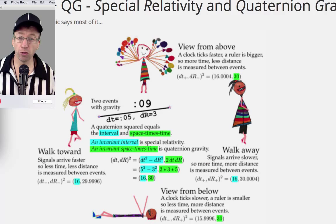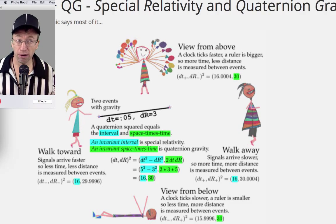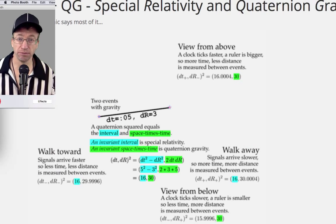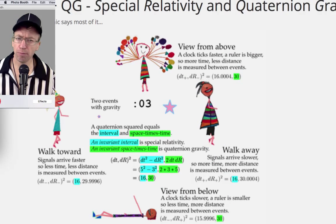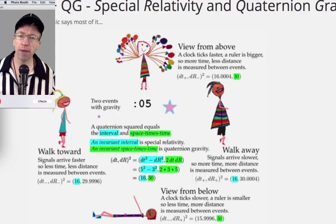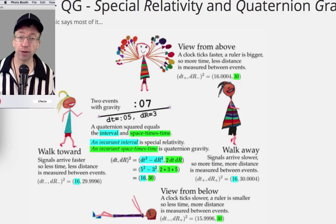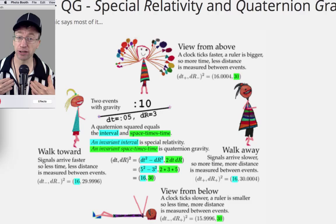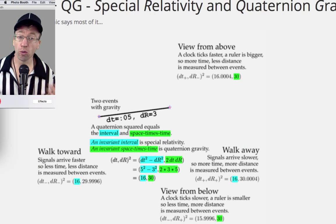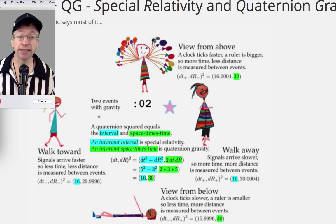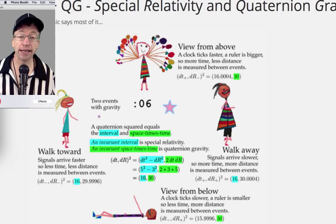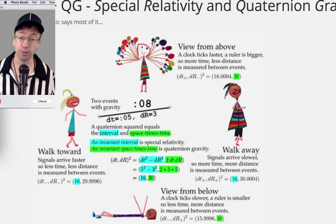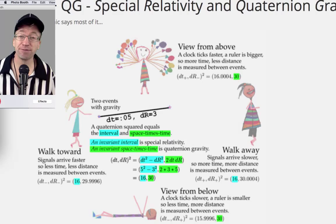The kids walking don't agree with the kids above and below about anything — the intervals are different and the space times time is different. But that's okay. What matters is the different agreements the kids make with me, the Reference Observer. The walkers agree about the interval — that is Special Relativity. And the kids above and below agree about space times time — that is my quaternion gravity proposal. And that's it for this PageCast. Thank you.